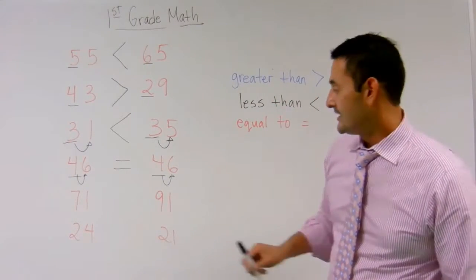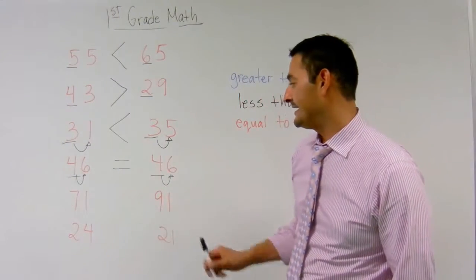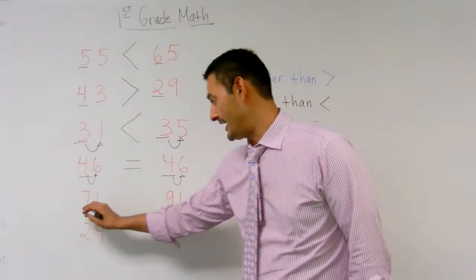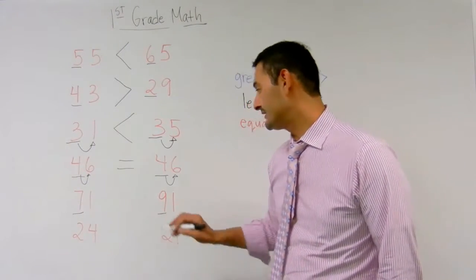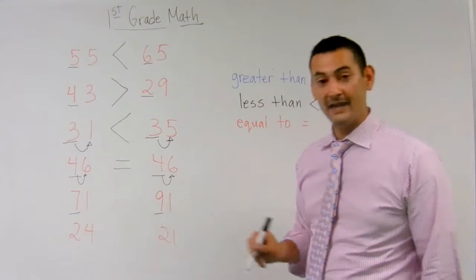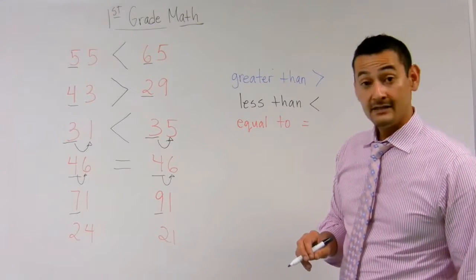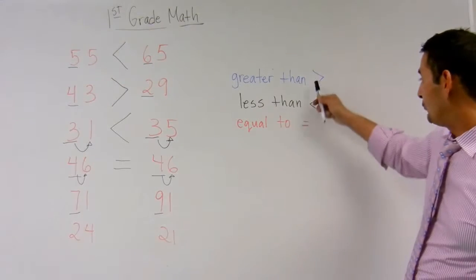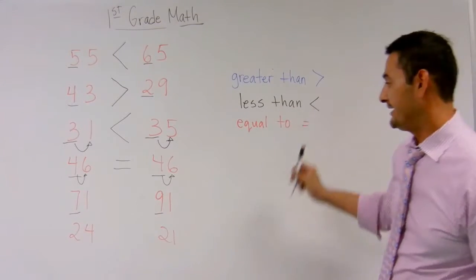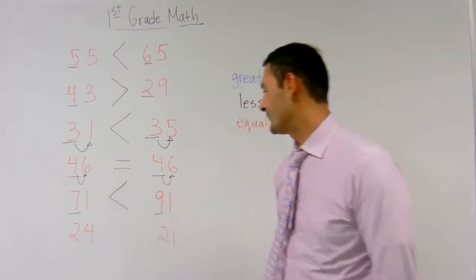Let's look at the next set of numbers. Here, I've got 71 and 91. What digit do I look at first? The tenths place, right? Look at the 7, look at the 9. Is 7 bigger or smaller than 9? Is it greater than or less than 9? 7 is less than 9, right? So, which symbol am I going to use? Less than, this one, right? Yes. Put that one right there.